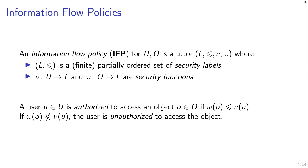We have two security functions: nu from the users to the security labels, and omega from the objects to the security labels. A user U is authorized to access an object O if the security label associated with that object is less than or equal to the security label associated with the user. A user is unauthorized if this is not the case — and we phrase it this way because it is only a partially ordered set, so some labels may not be comparable.